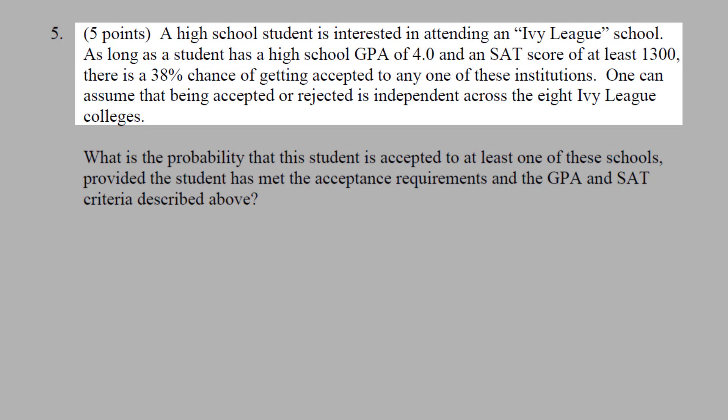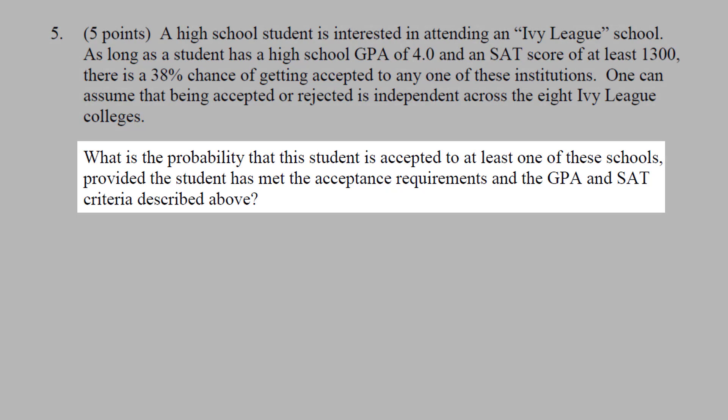A high school student is interested in attending an Ivy League school. As long as a high school student has a GPA of 4.0 and an SAT score of at least 1300, there's a 38% chance of getting accepted to any one of these institutions. One can assume that being accepted or rejected is independent across the eight Ivy League colleges. What is the probability that this student is accepted to at least one of these schools, provided that the student has met the acceptance requirement and the GPA and SAT criteria described above?